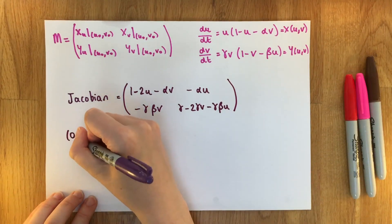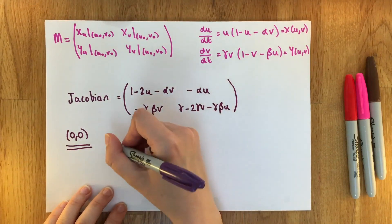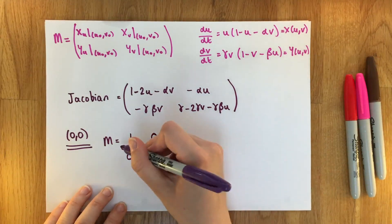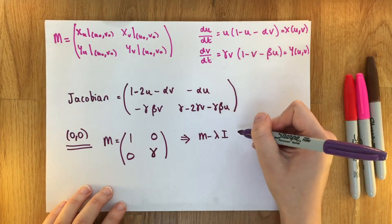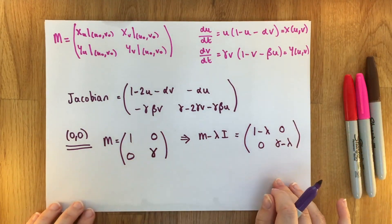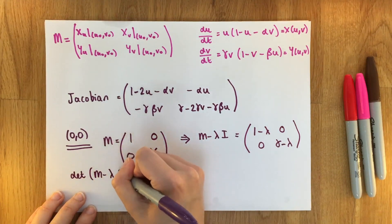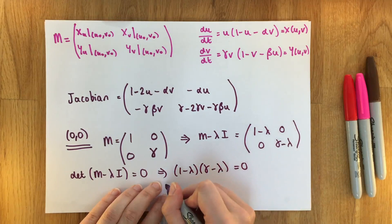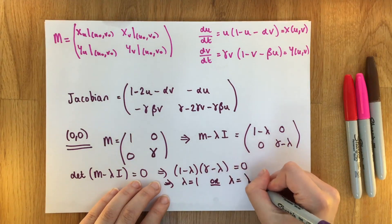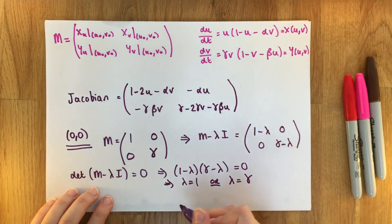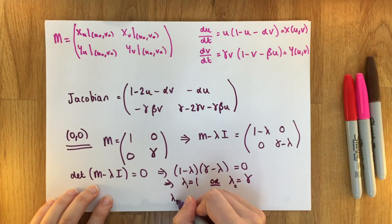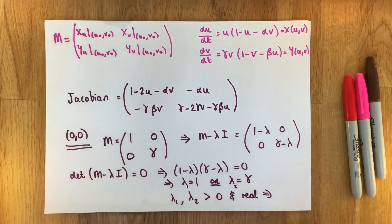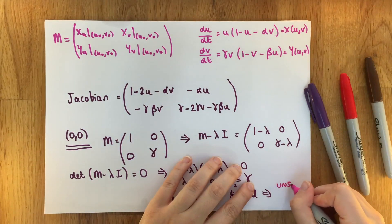Starting with the steady state (0,0): plugging in u=0 and v=0, our Jacobian becomes the matrix [[1, 0], [0, gamma]]. We find the determinant of (m minus lambda I) and set it equal to zero. We get (1 minus lambda)(gamma minus lambda) = 0, so the solutions are lambda = 1 or lambda = gamma. Since gamma must be positive for the dv/dt equation to make sense, both eigenvalues are greater than zero and real. We classify this as an unstable node.